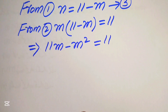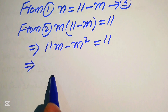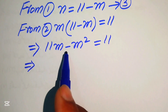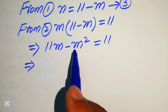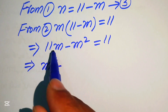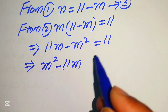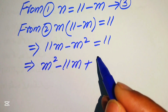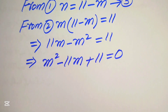This equation is quadratic in m but not in standard form, so we convert it. Moving the terms to the right-hand side: minus m squared becomes plus m squared, plus 11m becomes minus 11m, giving m squared minus 11m plus 11 equals to 0.